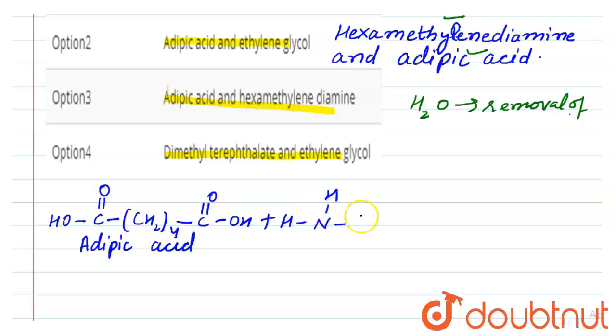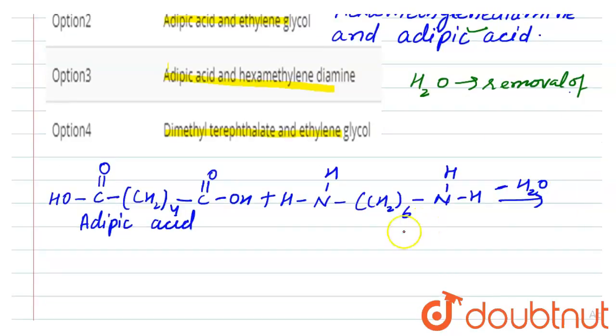H-(CH2)6-N-H-H. Here removal of H2O. So here it is the formula of hexamethylenediamine.